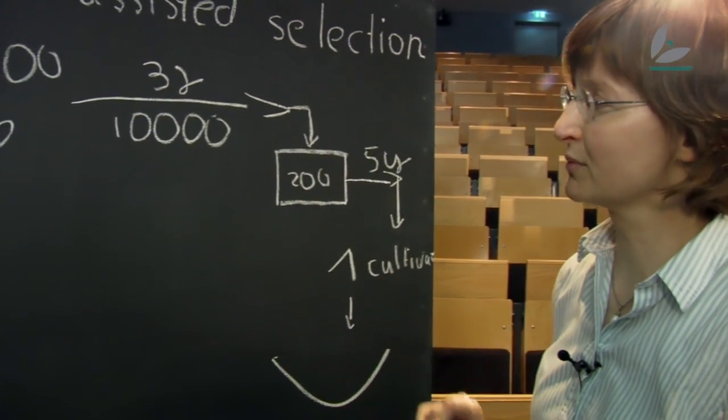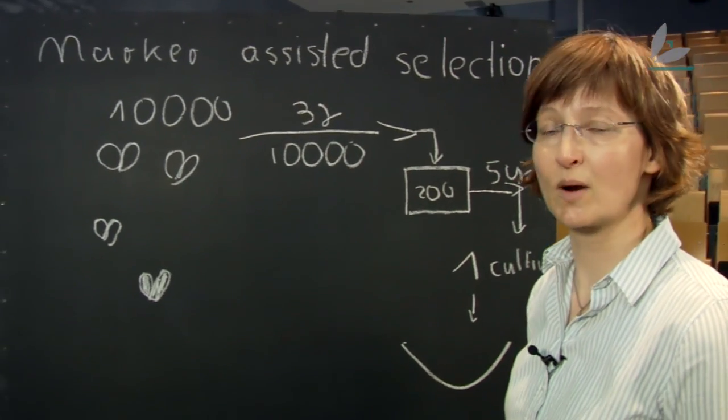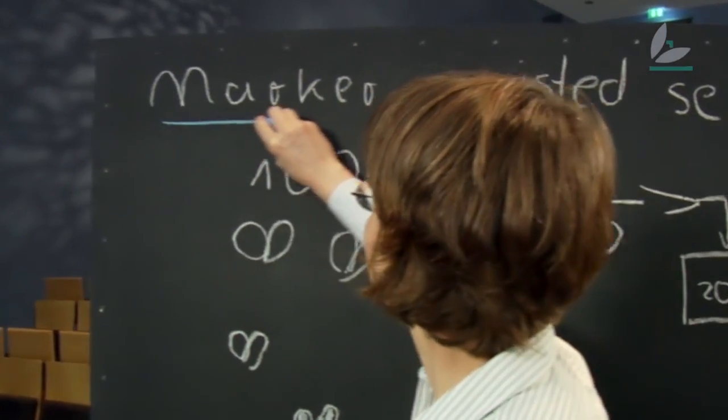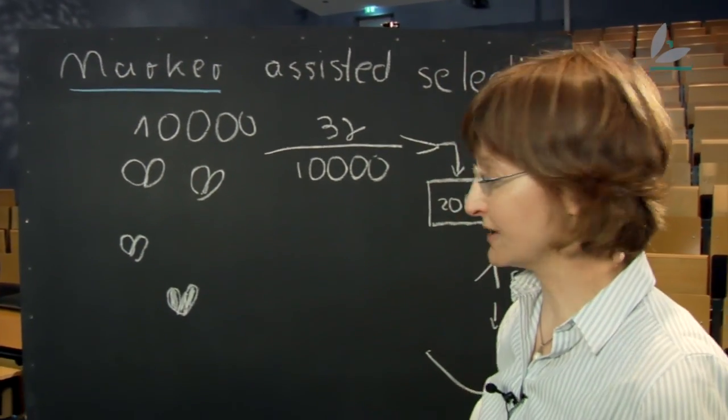The bad thing about the process is that it really takes long and we would like to speed up that process. And one of the ways to do this is to use so-called markers. Markers are features that can be really easily measured.